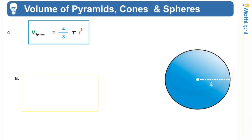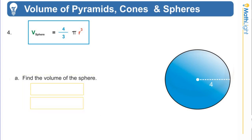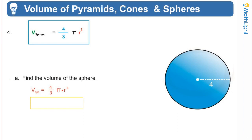Four thirds times pi times the radius cubed gives the volume of a sphere. Our first example has a sphere with a radius of 4 and we need to find the volume. Always start with the formula, write it down. Subbing in: four thirds times 3.14 times 4 cubed. Now I need to evaluate the exponent first — let me explain how to punch this into your calculator.